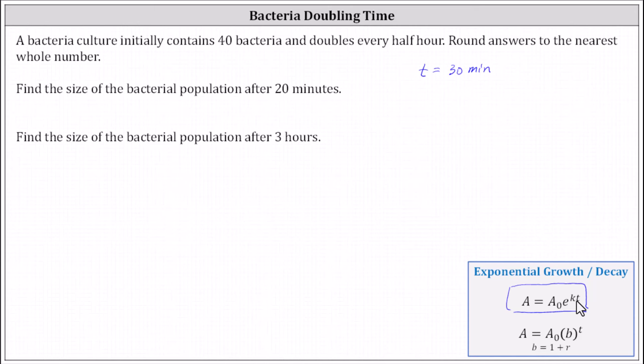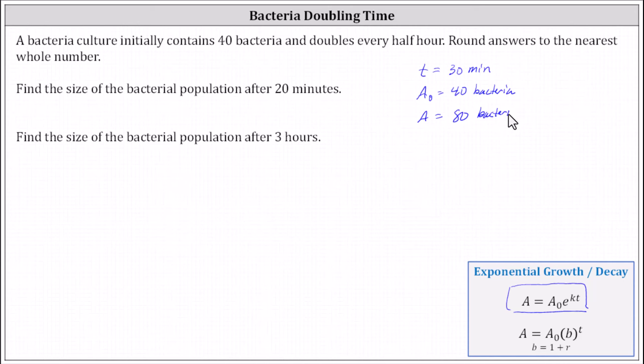Going back to the given information, we know that a sub zero is 40 bacteria — the initial population. And because the culture doubles in size every 30 minutes, we know a, the amount after time t, is 40 times two or 80 bacteria. This information will allow us to determine k. Once we determine k, we can write our exponential equation to answer the two questions.